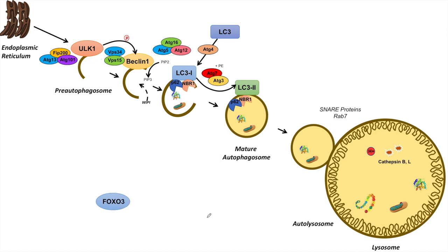The next transcriptional activator is FOXO3, which is itself inhibited by AKT. AKT is activated by PI3K, so PI3K can activate AKT, which inhibits FOXO3. When the PI3K pathway is suppressed, we see activation of FOXO3. When FOXO3 is activated, it enters the nucleus and activates a series of different proteins involved in the macroautophagy pathway.